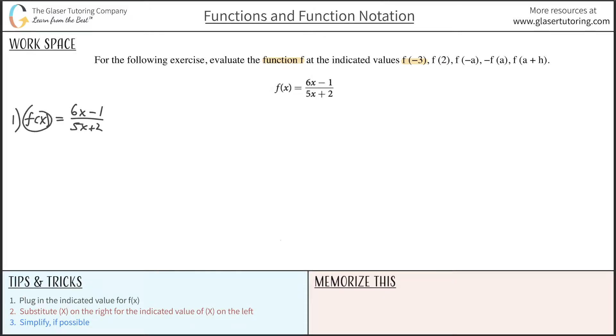So this is divided by 5x plus 2. So the first thing is for f of x, I'm now going to plug in f of negative 3. That's the first step. The second step then is to, as we identified down here in the bottom left, substitute all the x values on the right-hand side for the indicated value of x on the left-hand side, which is negative 3.